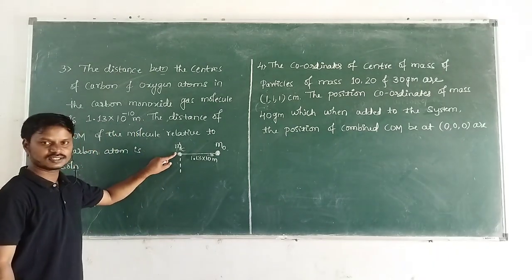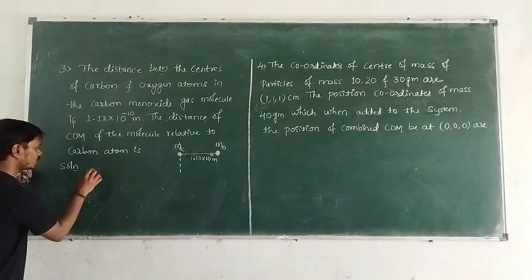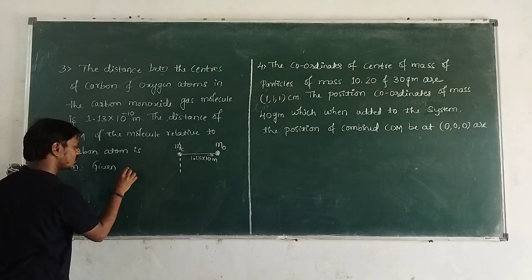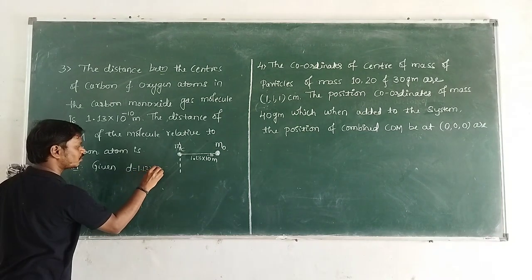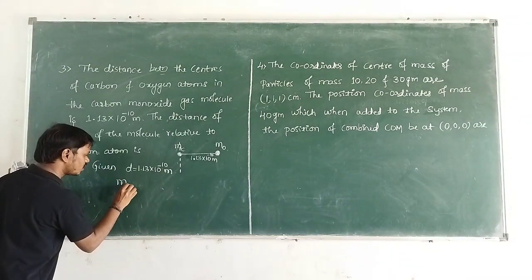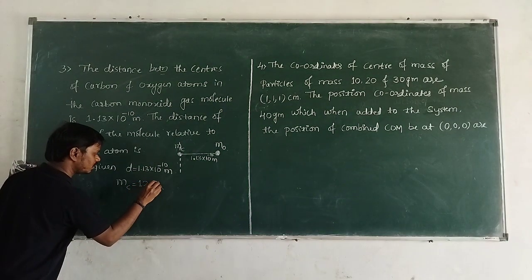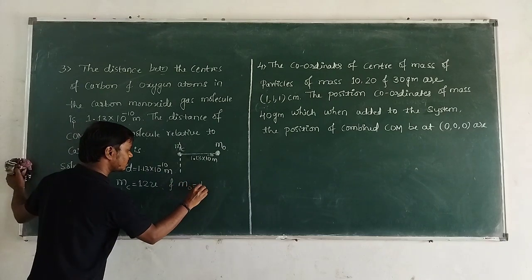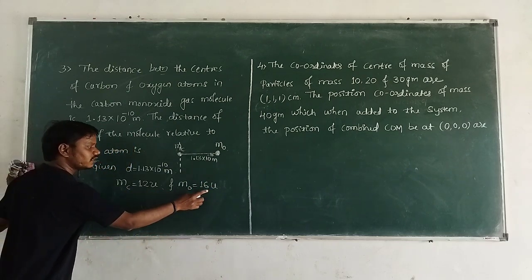Which is the first particle here? Carbon is the first particle, and oxygen is the second particle. The distance between the carbon atom and oxygen atom is D = 1.13 × 10⁻¹⁰ meter. The mass of the carbon atom is 12 atomic mass units, and the mass of the oxygen atom is 16 atomic mass units. These are the approximate masses of carbon and oxygen.